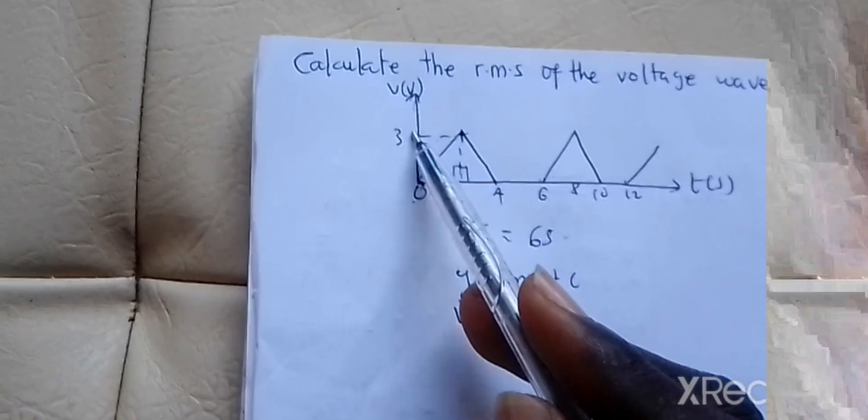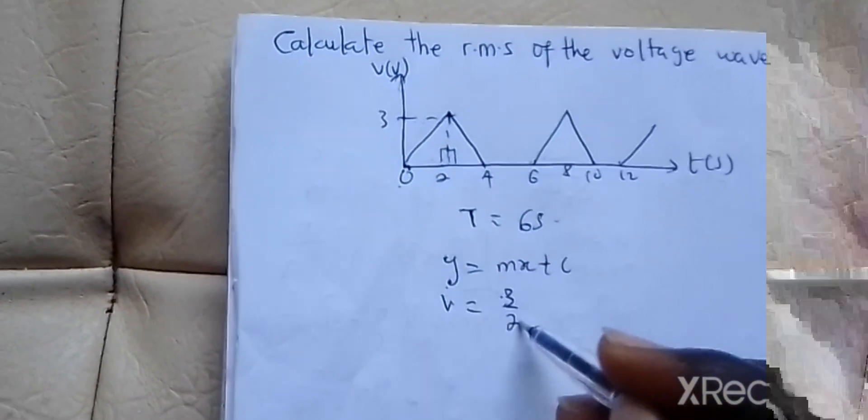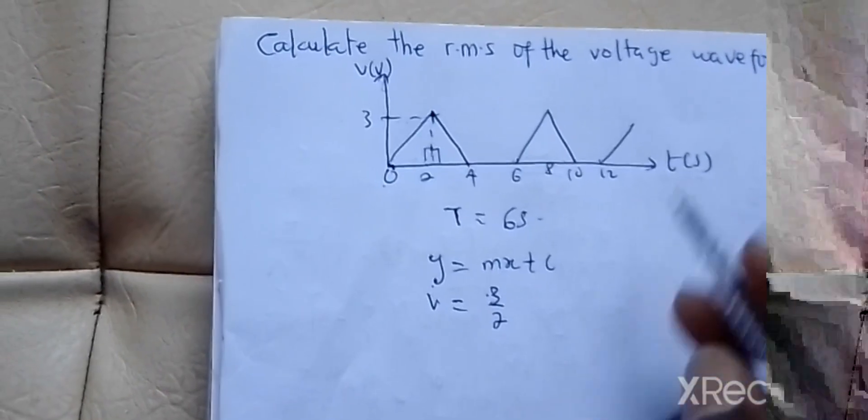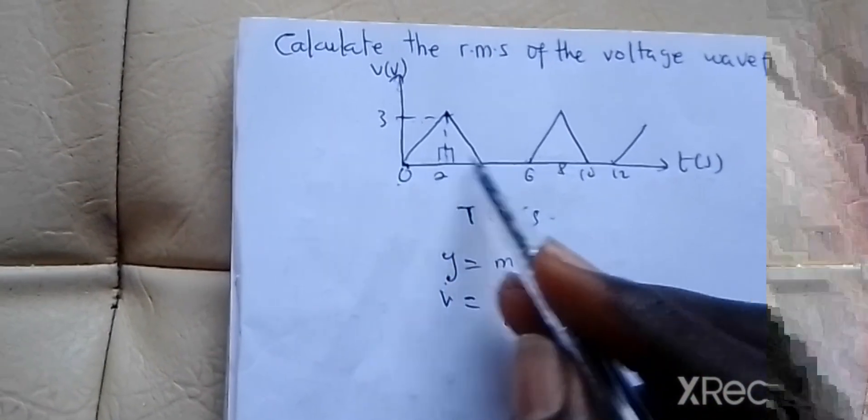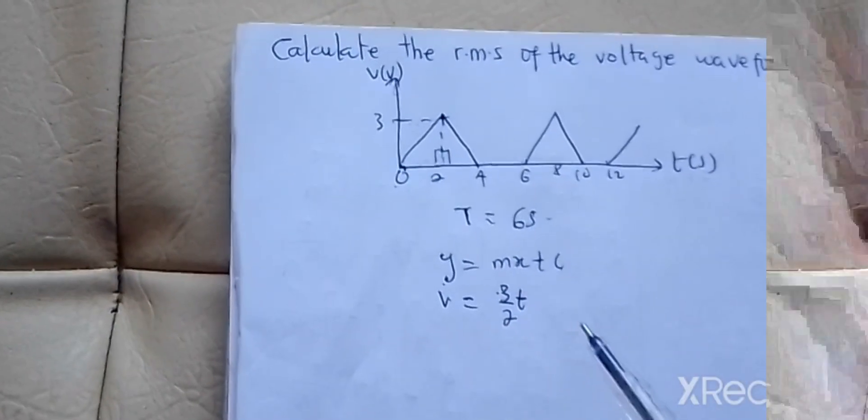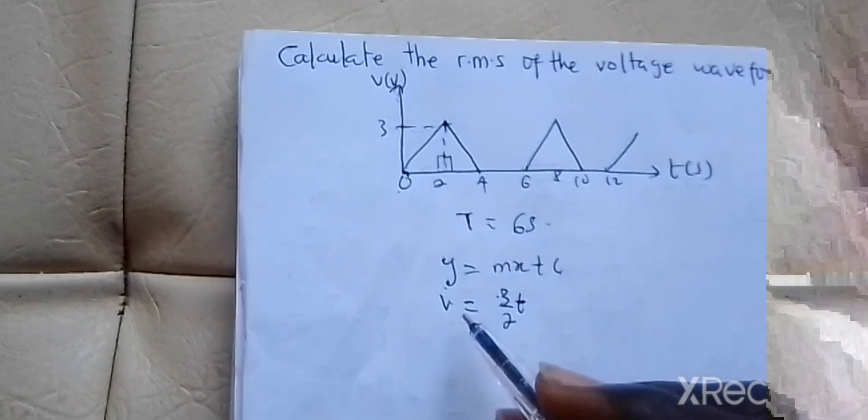Then our x is T, so 3 over 2 T. Our c is 0 because it's lying on the x-axis. Once you get this, this is the waveform function.